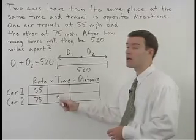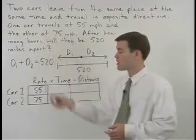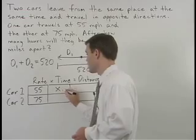We don't know the time for each car, but we do know that since they leave at the same time the two times are equal. So let's call the time for each car x.